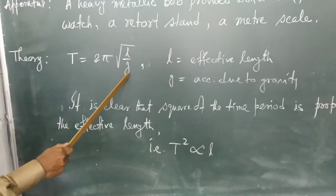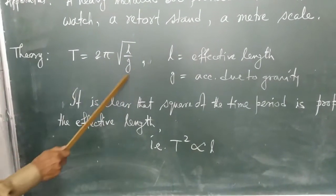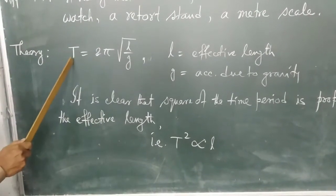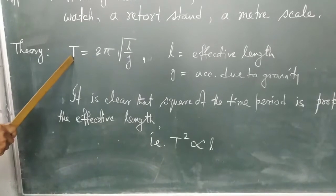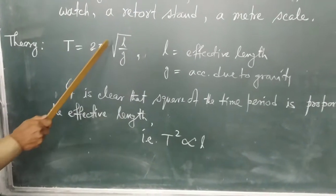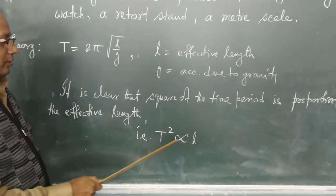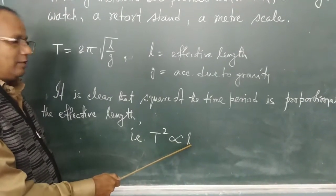is the acceleration due to gravity. It is clear from this formula that the square of time period is directly proportional to the effective length. That means T² is directly proportional to effective length.